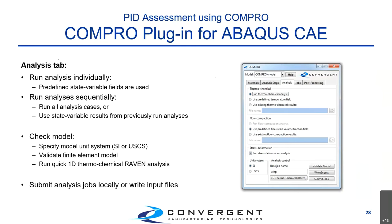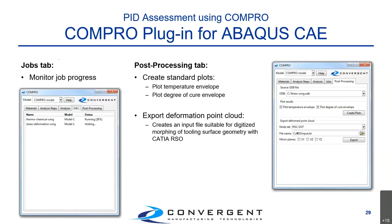Once you've selected the appropriate analysis options, you can use the tab to check model units — specifying either SI or imperial units — and then submit jobs locally or write input files to submit on a different machine or through a command line. Jobs submitted locally appear on the Jobs tab where you can follow progress, with status indicators showing if it's waiting or running and the percentage of simulation completed.